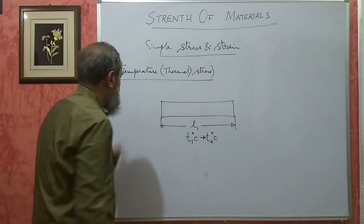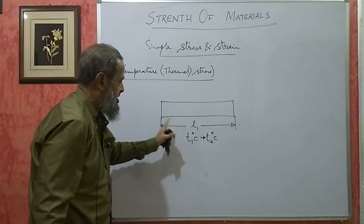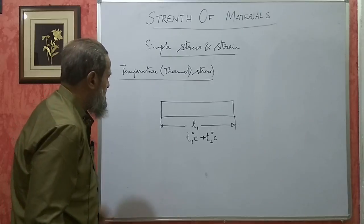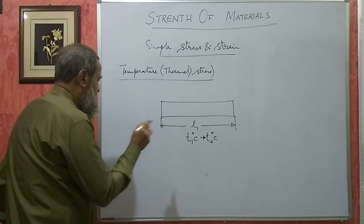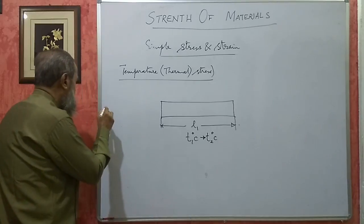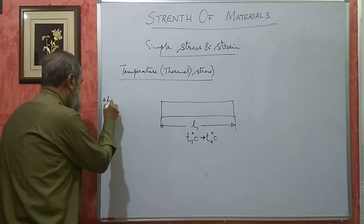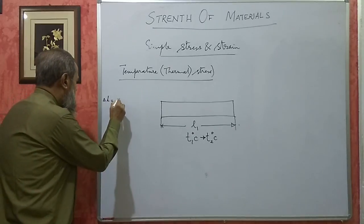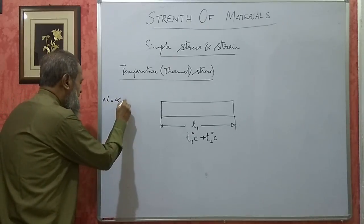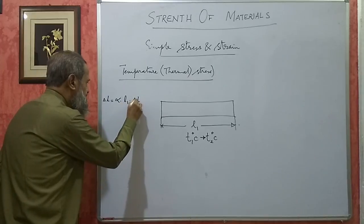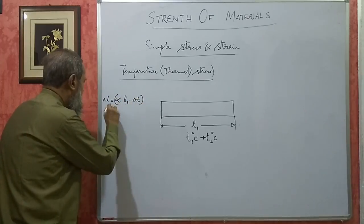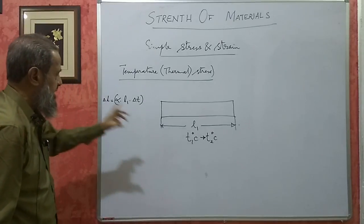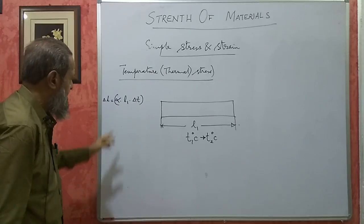That stress is known as temperature stress or thermal stress, because it is happening in the material due to change in temperature. The change in length it wants depends upon three things: α × L1 × ΔT. If you multiply these three, you get ΔL — that is how much the rod wants to increase or decrease in length.